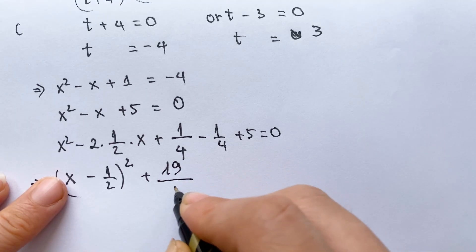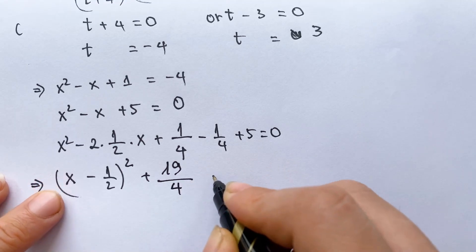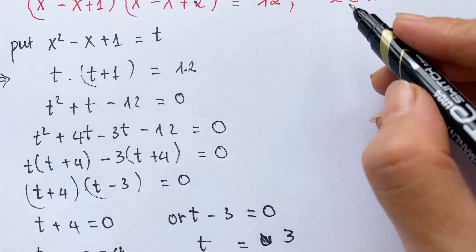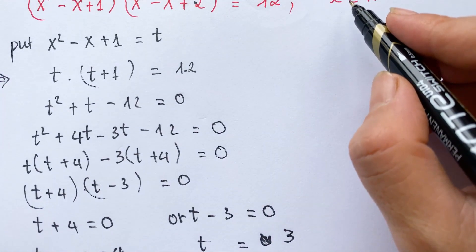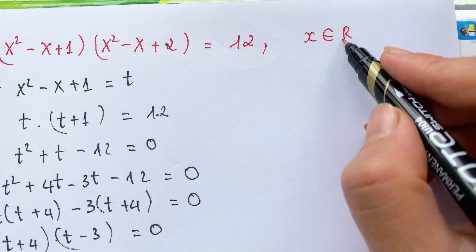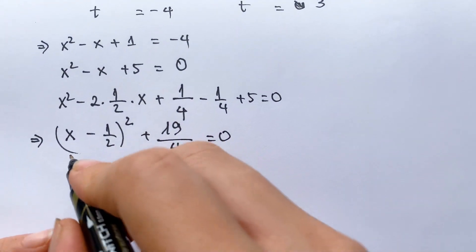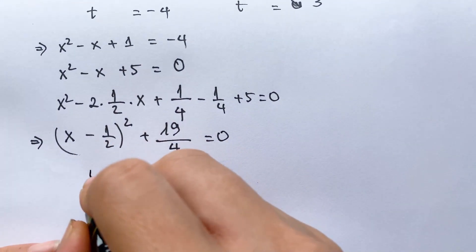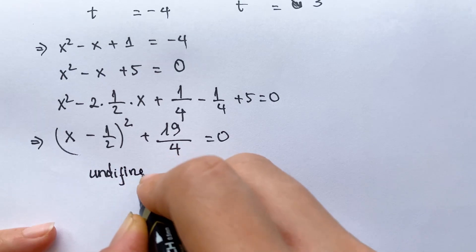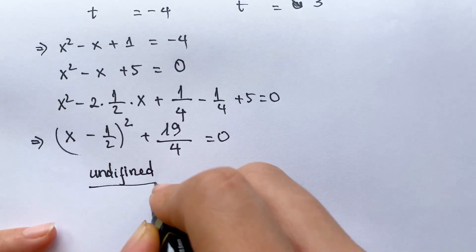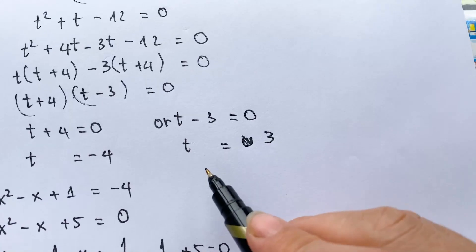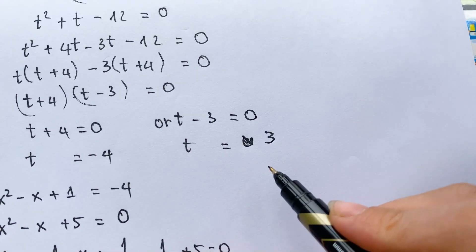Plus 19 over 4 equals 0. You can see that since x belongs to the real numbers, this equation has no real solution — it is undivided. So we look back to the case t equals 3.